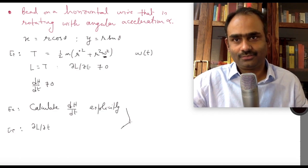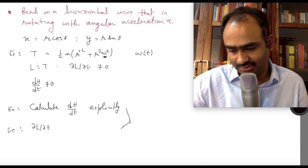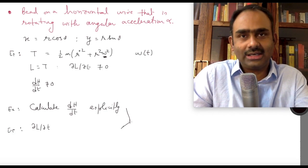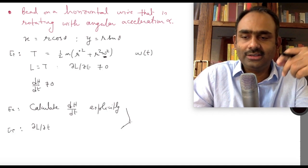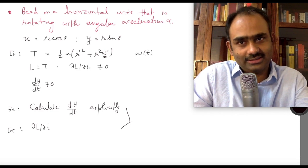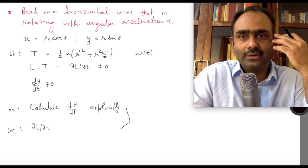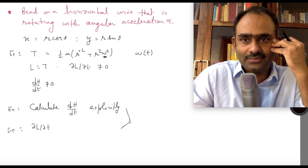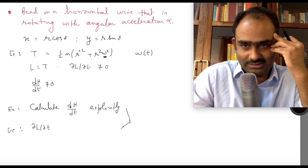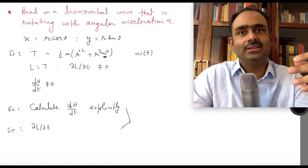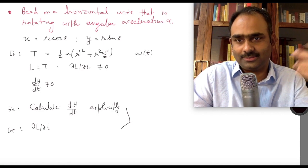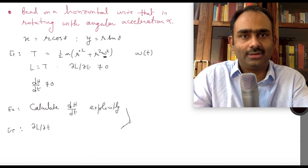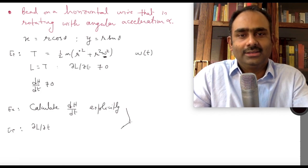Please do these simple exercises. In the next video, we will start talking about symmetry due to space translation. Here we were looking at symmetry of time translation and we saw certain quantities are conserved. We want to see the equivalent things when there is symmetry under translation in space — that will be the goal for our next video. See you then.